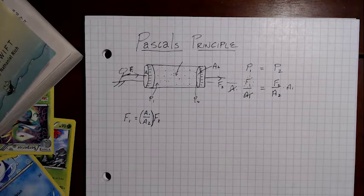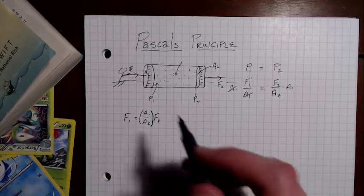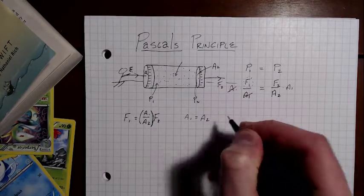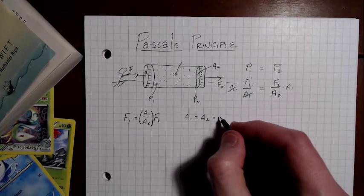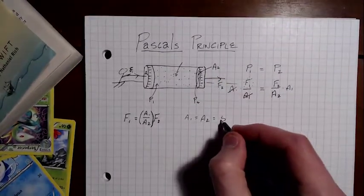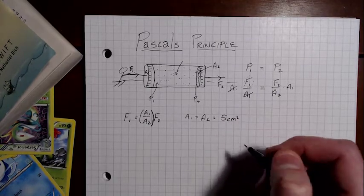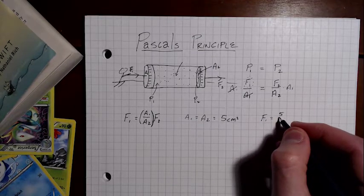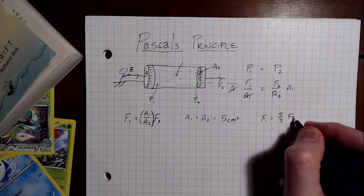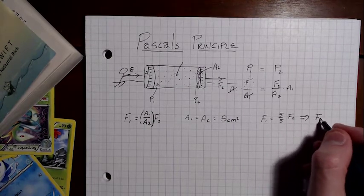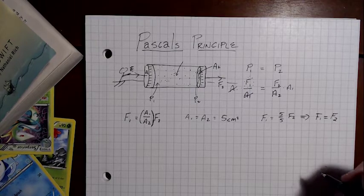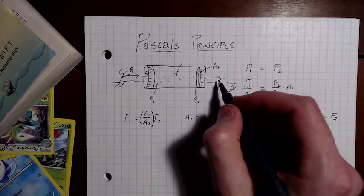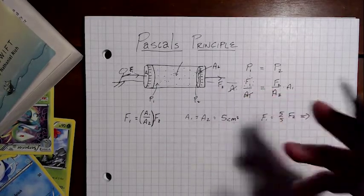Let's attach some numbers to these, and hopefully it'll make a little bit more sense. Let's say in this case, we see that A1 is equal to A2. Let's just say the areas are 5 centimeters squared each. If A1 is equal to A2, then we're going to get F1 is equal to 5 over 5 of F2. If we simplify that out, we just get F1 is equal to F2. So if this area is the same as this area, then the force that we put in is going to be the same exact force that's going to be put out on the other side.